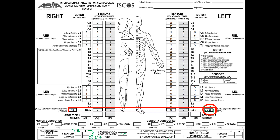Now we need to decide: is it ASIA B, C, D, or E? It's definitely not A. What we have here is sensory function but not motor, so it might be ASIA B. We need to check the motor level. The motor level on the right is C6, and we have motor function more than three segments below the motor level on the right. Checking the left — motor level is C7 — and yes, also here we have motor function more than three segments below the neurological level. So it is ASIA C.